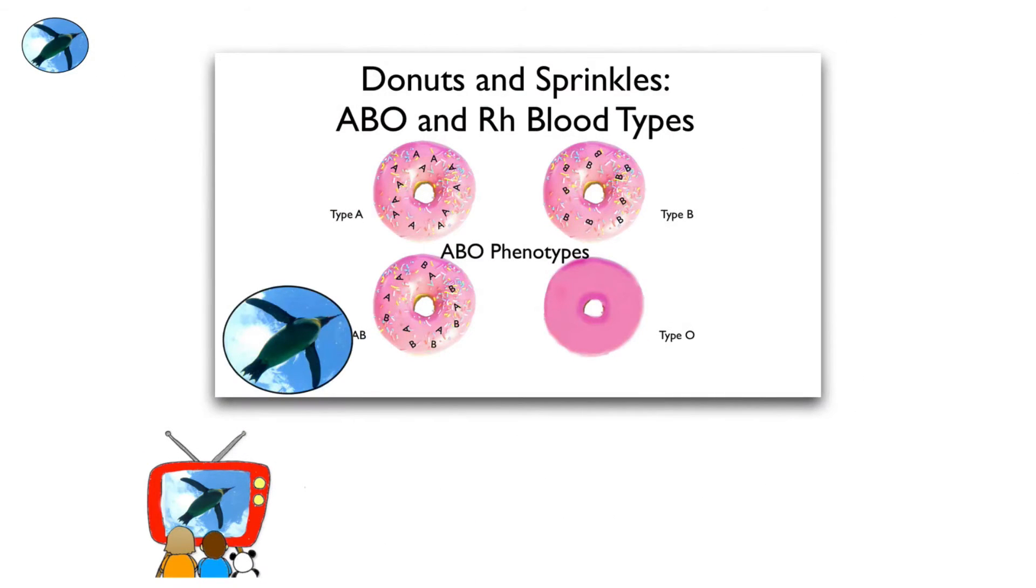Today's questions come from the Donuts and Sprinkles video, the ABO and Rh blood types. I get a lot of questions from these videos, sample problems and things like that. If you haven't seen that video yet, I will of course link that below as well as other videos having to do with blood types.